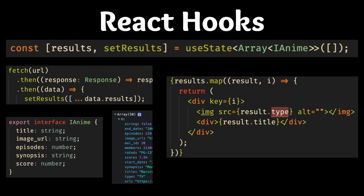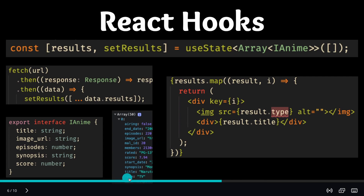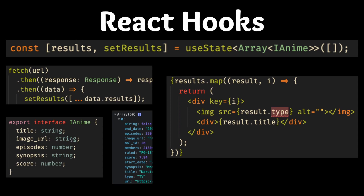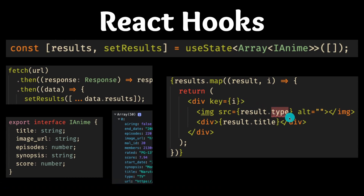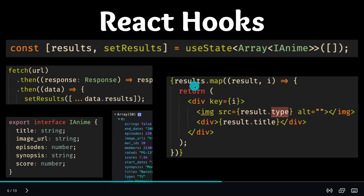TypeScript is checking before the code runs. When I'm fetching and setting the data, technically 'type' does exist — the type of Naruto is TV. But we're telling our project that all of the anime inside the results will have these five things and nothing else, so TypeScript throws an error. Obviously in this case if pushed to production it would still work, but there are many times when it doesn't — maybe instead of result.type I accidentally put result.types. So I would change this to results.imageURL. Now we've got the data, we're setting it, and we're displaying the results inside of our page.